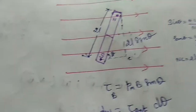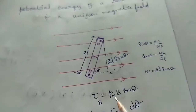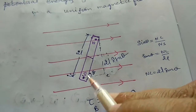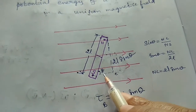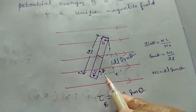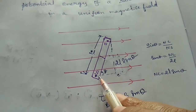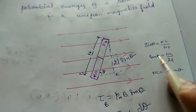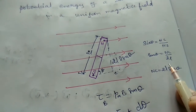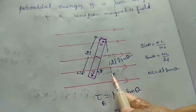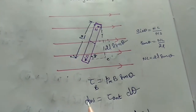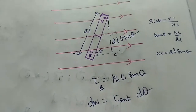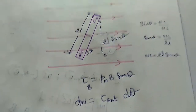Now I calculate the length. The length is 2L. This triangle — the opposite side is NC, the hypotenuse is NS, so sin theta equals NC divided by 2L. The torque acting in the magnetic field on the bar magnet is PmB sin theta.